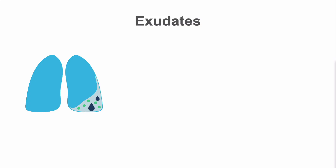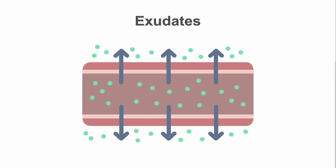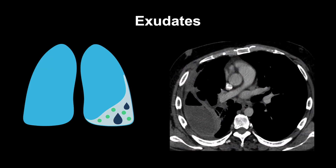Exudates result from damage to the pleura due to infection, neoplasm, or inflammation. The damaged pleura allows a fluid full of inflammatory cells and protein to leak into the pleural space. In the initial phase of an exudate, the pleura doesn't thicken. As the process progresses, fibrin deposition can lead to pleural thickening and loculations, which prevent the fluid from flowing to other areas. So, if there is non-dependent fluid loculated in lens or crescent-shaped collections with pleural thickening, think exudate.